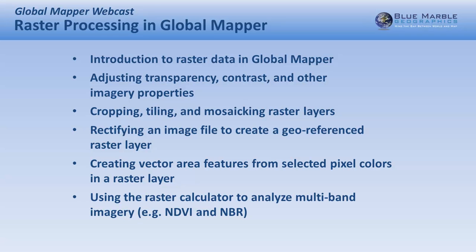We will then talk about the raster calculator — introduced fairly recently — the ability to perform a numeric calculation against raster data. Specifically, we're going to conduct an NDVI (Normalized Difference Vegetation Index) analysis to determine the relative greenness of an area. This will be derived from multiband Landsat imagery, performing a calculation on the red band and the near-infrared band to gauge relative greenness. We'll also take that analysis further and do a seasonal comparison.